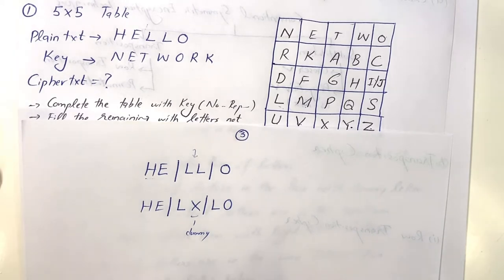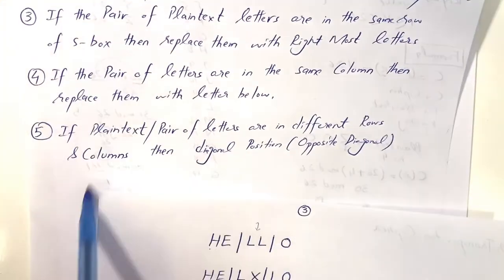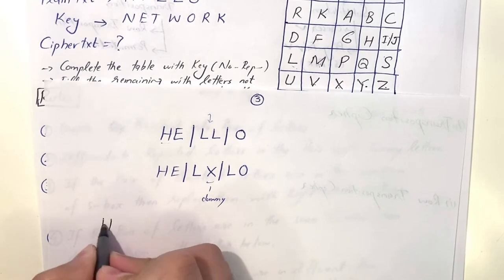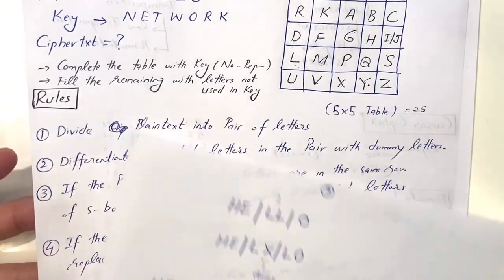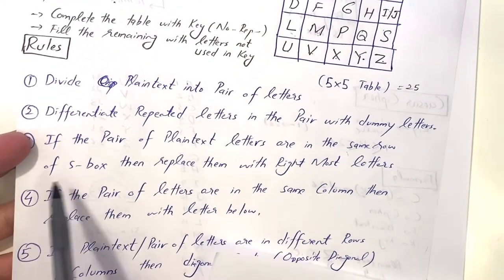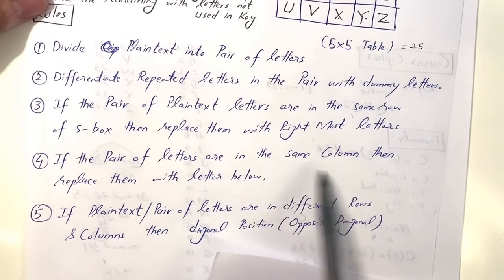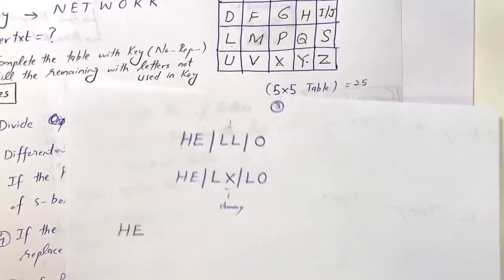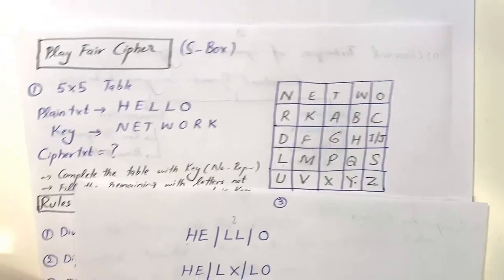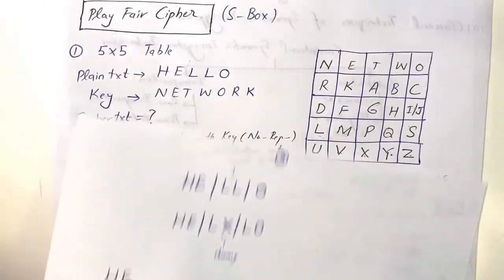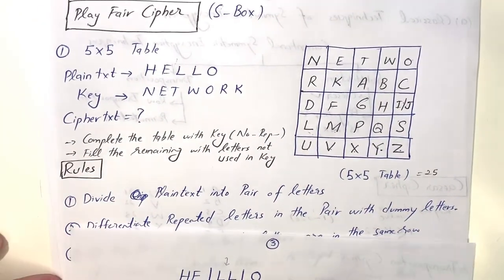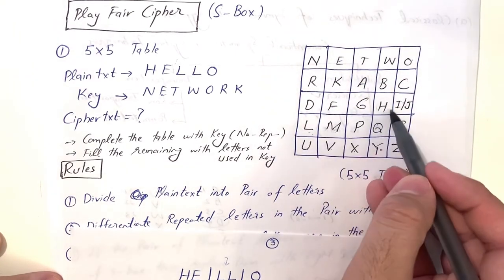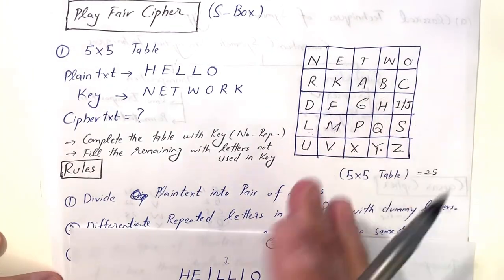We have now covered the substitution and transposition schemes. Let me now give a brief introduction to modern techniques. Symmetric encryption can be performed in two ways: stream cipher and block cipher. Stream cipher encrypts data bit by bit — it is used for small messages or small data. Block cipher divides the plain text into equal-size blocks or chunks, then encrypts them block by block.